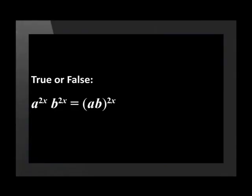Let's do one more example. Here's a mathematics statement. A to the power of 2x multiplied by b to the power of 2x equals a times b all raised to the power of 2x. Is this true or false?